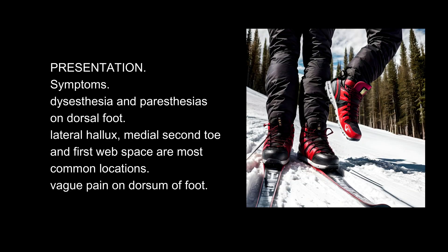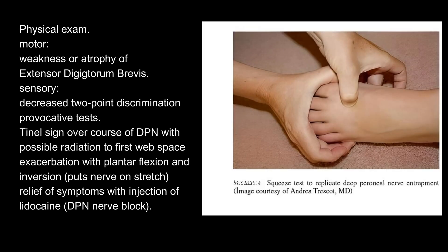Presentation. Symptoms: dysesthesia and paresthesias on the dorsal foot — lateral hallux, medial second toe, and first web space are the most common locations. Vague pain on the dorsum of the foot. Physical exam: motor — weakness or atrophy of extensor digitorum brevis; sensory — decreased two-point discrimination. Provocative tests: Tinel's sign over the course of the DPN with possible radiation to the first web space; exacerbation with plantar flexion and inversion (puts nerve on stretch); relief of symptoms with injection of lidocaine DPN nerve block.